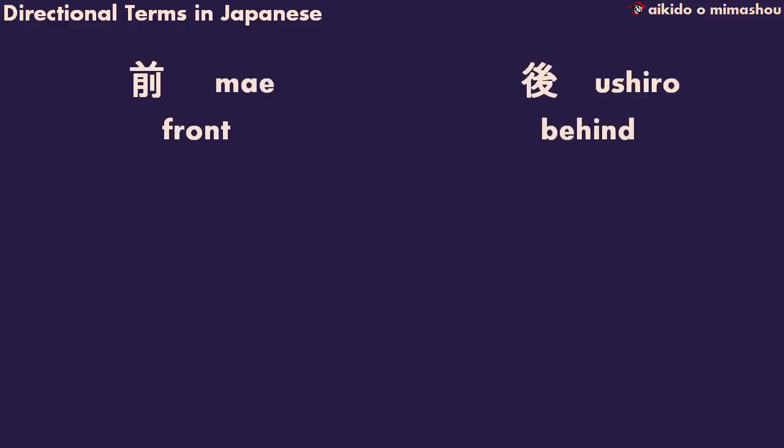Next, we have front and behind. Ma-e, often said as 'mai' in English-speaking dojos, and u-shi-ro. These two words are normally used to explain direction from your point of view. For example, an opponent can either be in front of you or behind you. You normally make strikes in front of you, but you may need to strike someone behind you during an ambush.